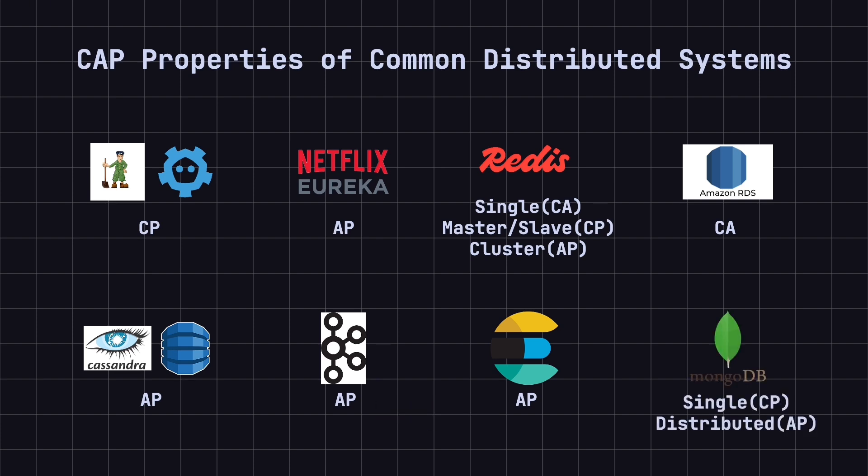Eighth, MongoDB. In a single-node setup, MongoDB is a CA system, since it ensures both consistency and availability without needing to handle network partitions. In a distributed setup, MongoDB is typically considered an AP system, prioritizing availability and partition tolerance, even if it leads to temporary inconsistencies. MongoDB also offers tunable consistency options, allowing users to adjust the balance between availability and consistency based on their needs.